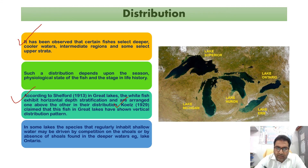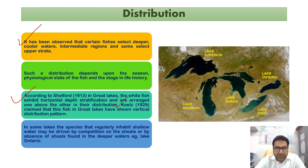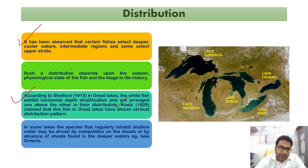One study showed horizontal depth stratification in the case of whitefish, whereas Cools (1929) claimed this fish in the Great Lakes also has a vertical distribution pattern. In some lakes, species that regularly inhabit shallow water may be driven by competition or absence of shoals into deeper waters — for example, in Lake Ontario.